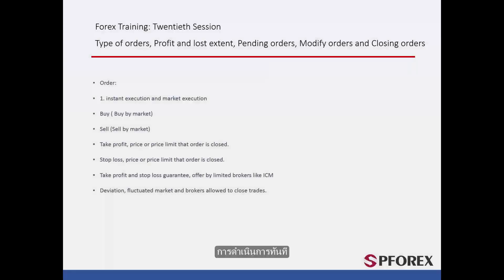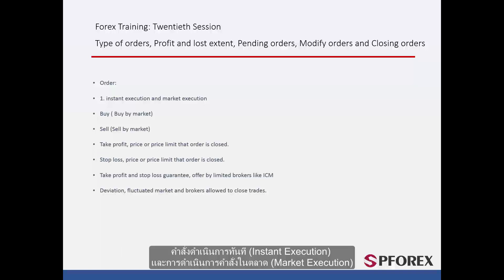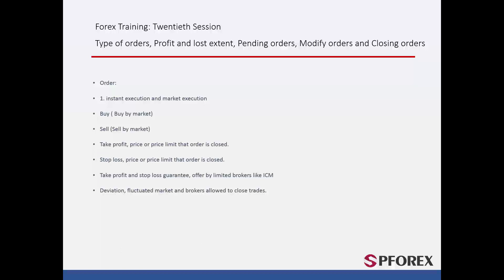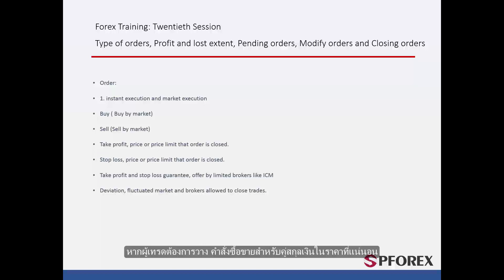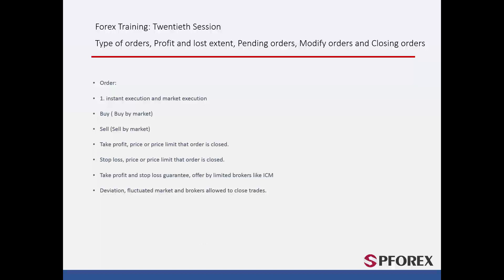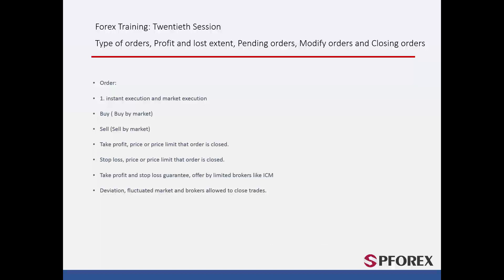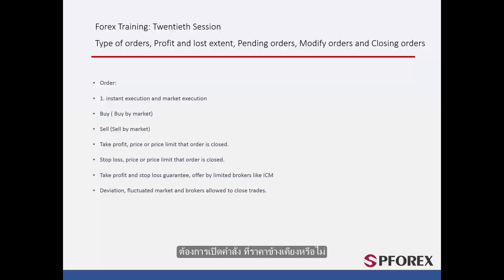Orders can be classified into two types on the basis of their execution method: instant execution and market execution. If a broker provides instant execution orders and a trader wants to order a trade on a symbol at an exact price, then a broker must place that order exactly on the trader's desired price. If an order cannot be taken, a broker may ask a trader whether he or she would prefer to open the order at another adjacent price.